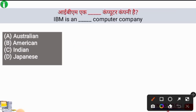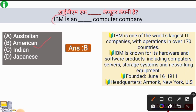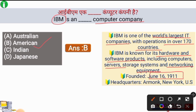Next question: IBM is an example of what type of company? The right answer is option B, American computer company. IBM's full form is International Business Machine and it is an example of an American computer company. IBM is one of the world's largest IT companies with operations in over 170 countries, known for its hardware and software products including computers, servers, storage systems, and networking equipment. IBM was formed on 16 June 1911 and its headquarters are in New York, US.